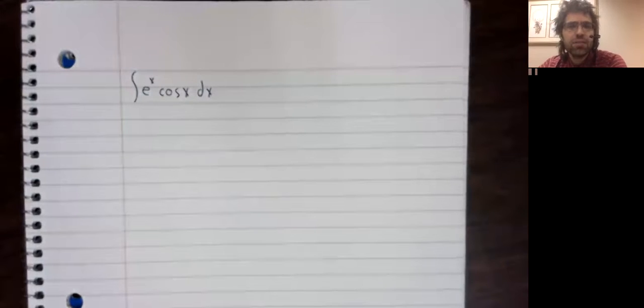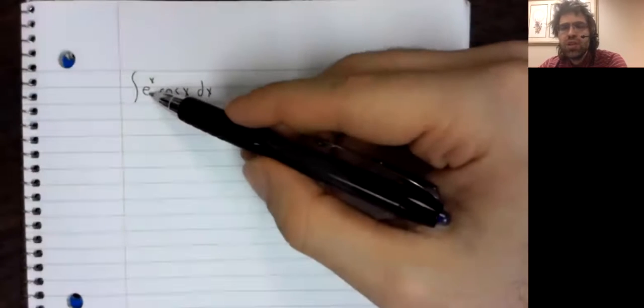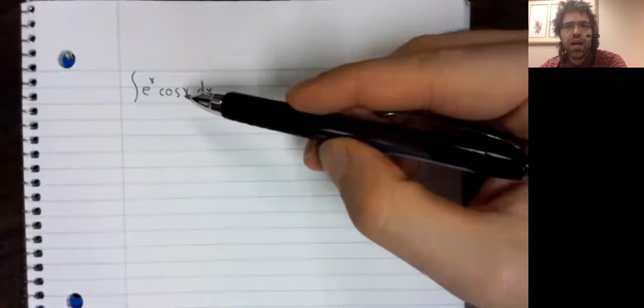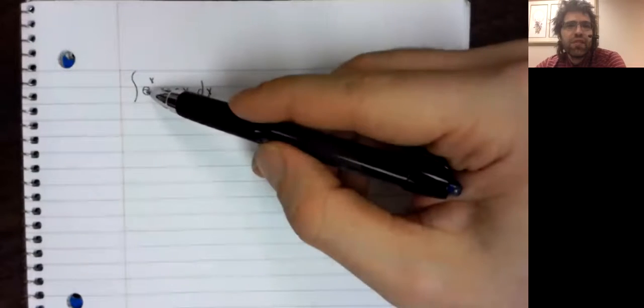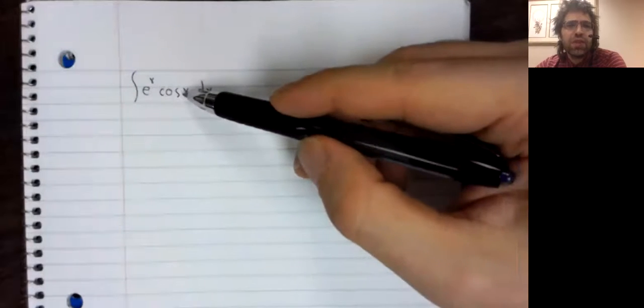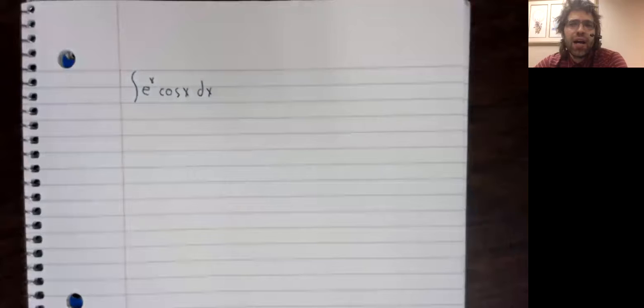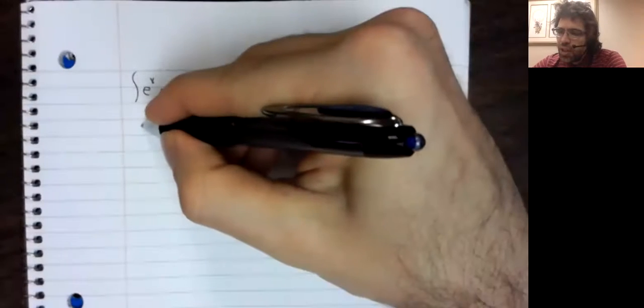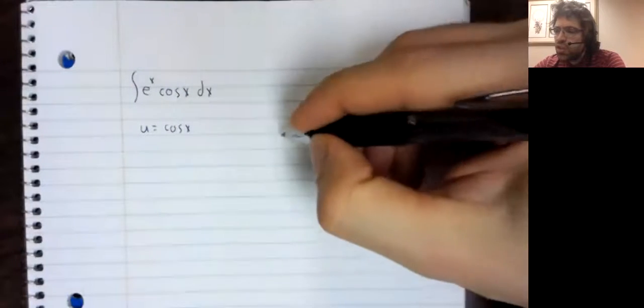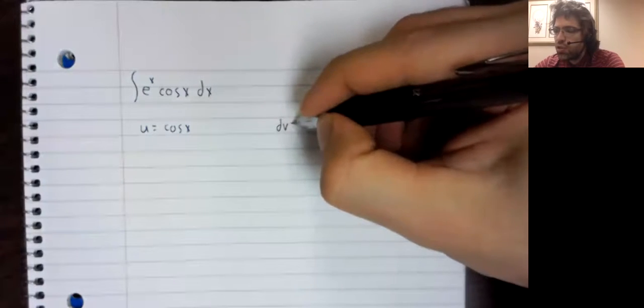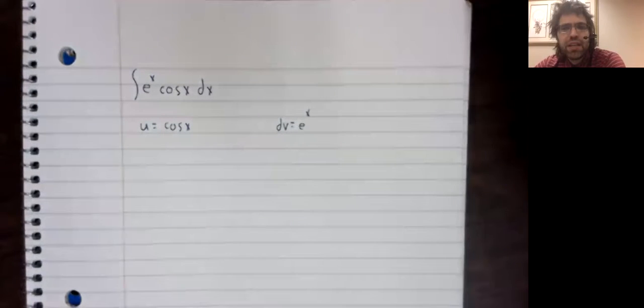The integral of e to the x times the cosine of x. And at first blush, this does not seem very hopeful because whether we let u be e to the x or u be the cosine of x, du isn't any simpler than u. The derivative of e to the x is e to the x. The derivative of the cosine of x is the negative sine of x. So the key to integration by parts is that u ought to get simpler when we take the derivative. And that isn't happening here.